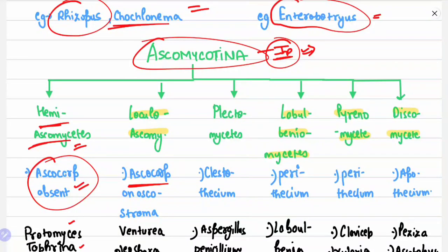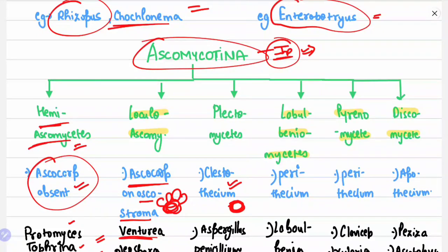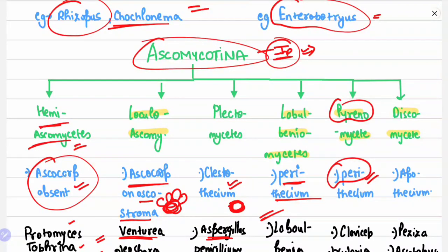In Hemiascomycetes, ascocarp is absent — examples: Protomyces and Taphrina. In Loculoascomycetes, ascocarp is present and found on ascostroma — examples: Venturia and Pleospora. In Plectomycetes, cleistothecium is found — examples: Aspergillus and Penicillium. In Laboulbeniomycetes, perithecium is found — example: Laboulbenia. In Pyrenomycetes, perithecium is found — examples: Claviceps and Xylaria. In Discomycetes, apothecium is found — examples: Peziza and Ascobolus.